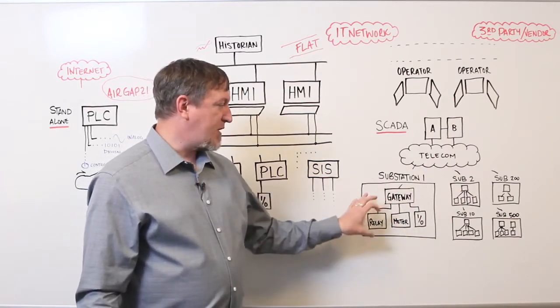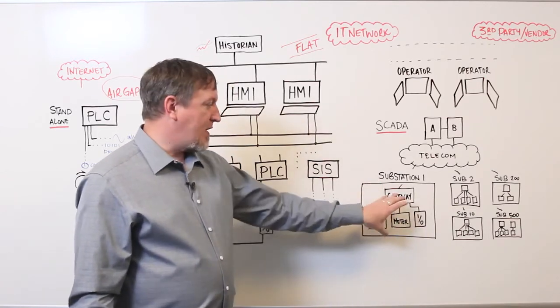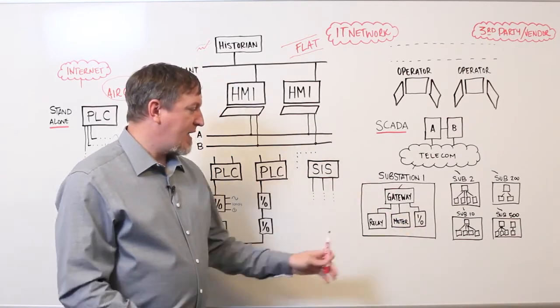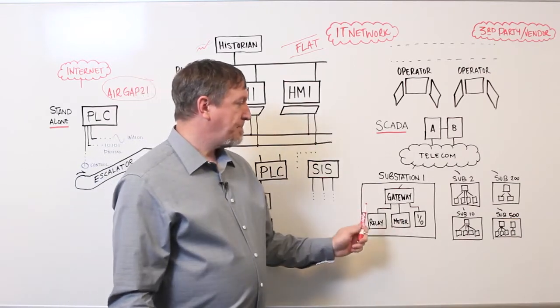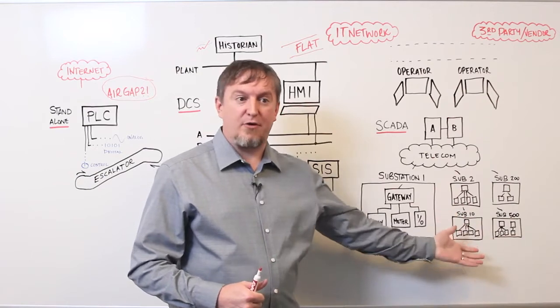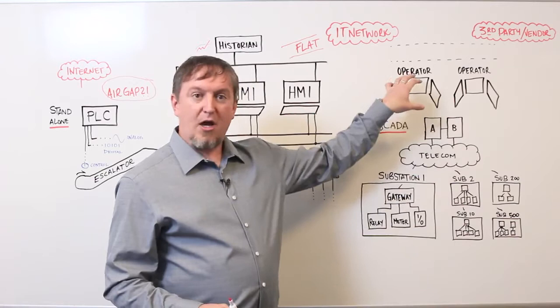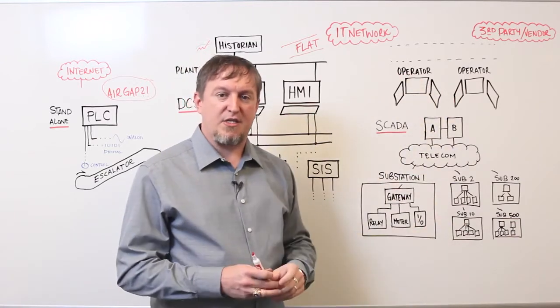So, you might have a power substation, or in the case of water, a water well site. And you have a gateway, different controllers down at the bottom. And you have maybe 50, 100, 500 of these substations that you're getting connectivity to, getting data from, and then the operators are sending controls down to these sites.